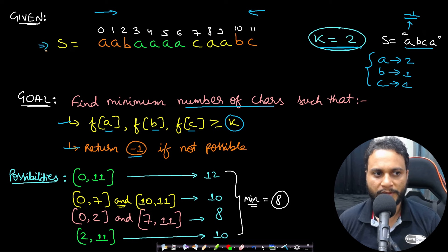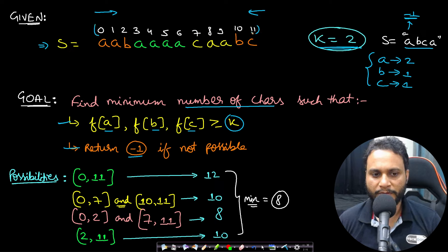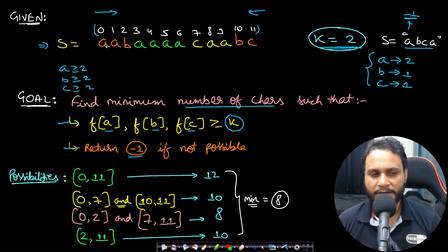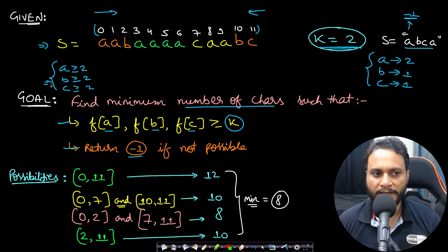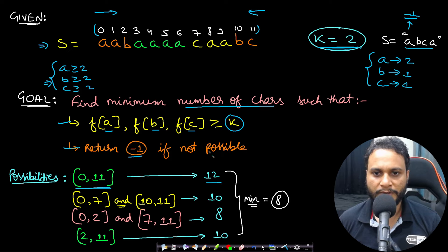Going back to our length-12 example: if we include everything from index 0 to 11, the frequency of a is 8, b is 2, and c is 2 — all greater than or equal to 2. So the full string is a valid window of size 12. But there may be smaller valid windows.